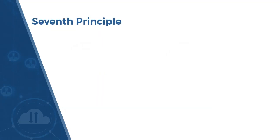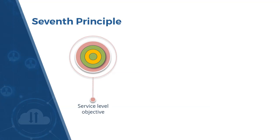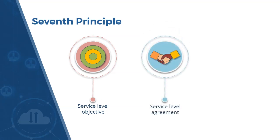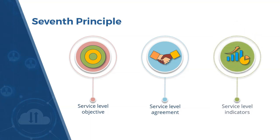The seventh principle essentially deals with communication. Written service-level objectives, which can be used as baselines against which actual performance values will be measured, along with an agreed-upon service-level agreement, which outlines the level of performance a provider can offer and that a customer finds satisfactory, and service-level indicators, which generally take the form of dashboards or charts that can display actual measured values and/or generate alerts if an indicator falls below a stated objective. To put all of this into plain English: don't make promises you can't keep.